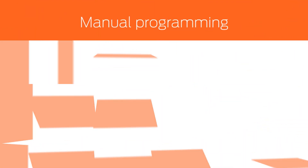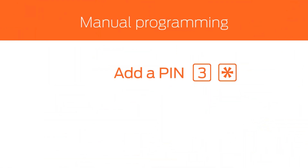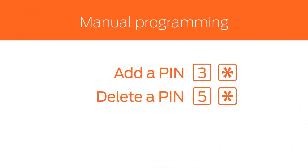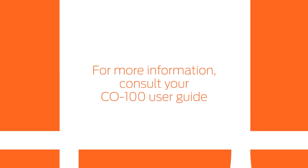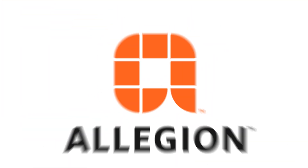In summary, 3 star is used to add a PIN, 5 star is used to delete a PIN, and 7 star is used to change the programming code. For more information about these and other manual programming commands, consult your CO100 user guide.